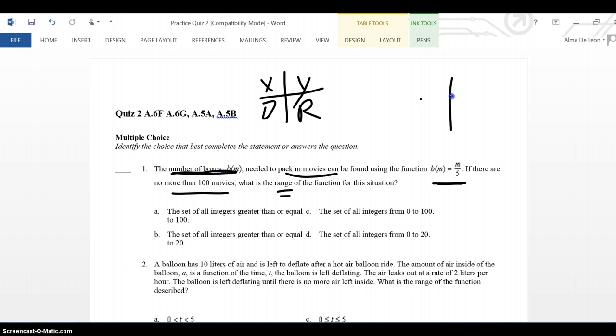So, let's make a little table. Instead of X, what they have is an M, which stands for the number of movies. And instead of Y, they're using BM, which is the number of boxes that you need to box those movies. Suppose that you have 0 movies. How many boxes would you need? Well, looking at our equation, I would plug in 0 for the M. So, I would have BM equals 0. 0 divided by 5 is 0.